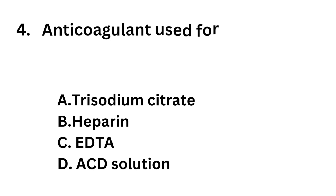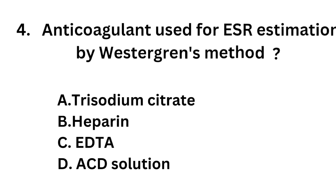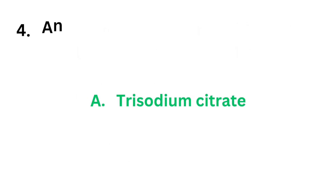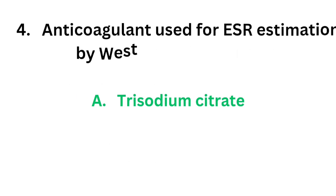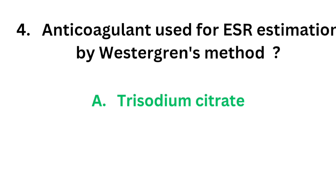Question number 4. Anticoagulant used for ESR estimation by Westergren's method. Option A: Trisodium citrate. Option B: Heparin. Option C: EDTA. Option D: ACD solution. The correct answer is Option A, Trisodium citrate. Anticoagulant used for ESR estimation by Westergren's method is Trisodium citrate.